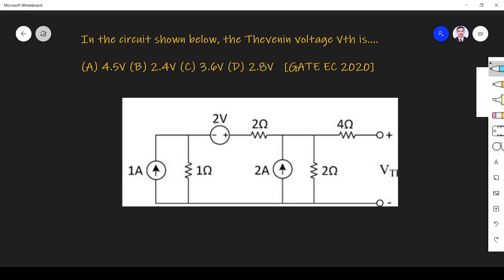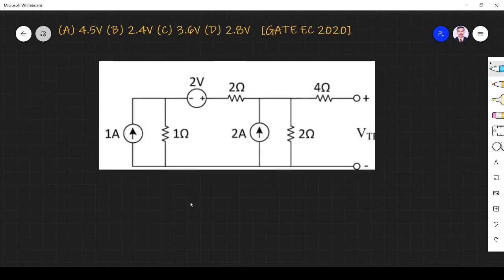This is given here. Across this terminal we have to find Vth. So Vth we know it is open circuit voltage. Vth voltage is nothing but open circuit voltage. So since it is open, we have to find what is the voltage across this. We know that in open circuit current is 0. So here current is 0.